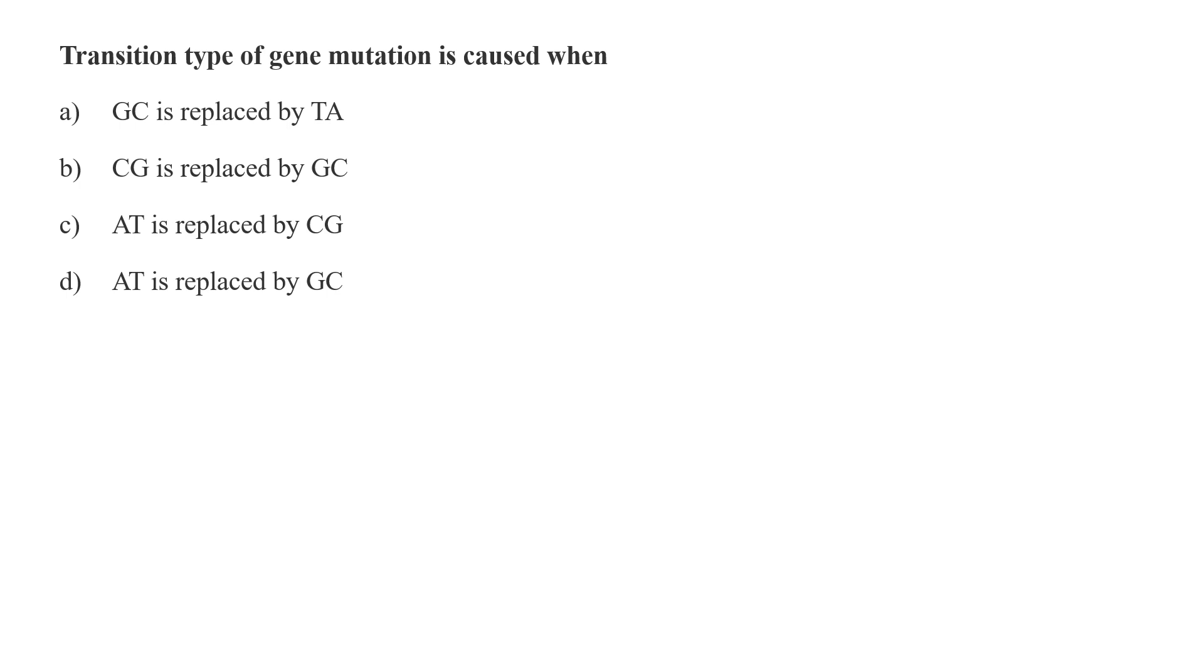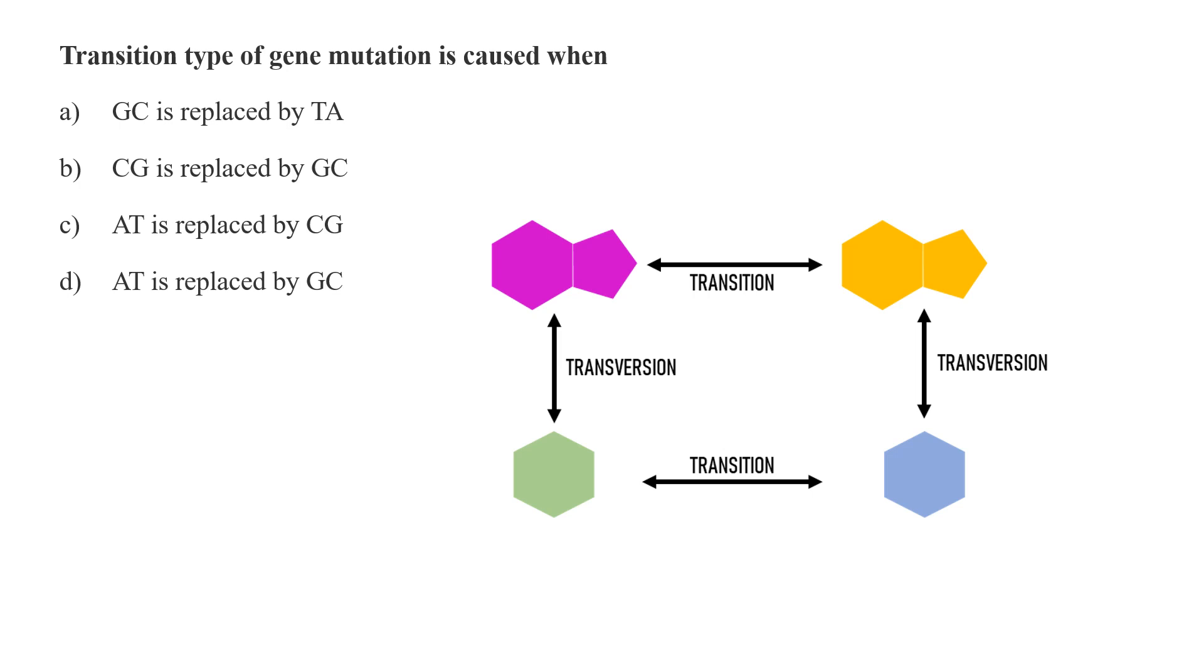Transition type of gene mutation is caused when GC is replaced by TA, CG is replaced by GC, AT is replaced by CG, or AT is replaced by GC? Whenever a ring is exchanged with a similar ring, then such mutations are called transition. But if a ring is replaced with a different ring system, then such mutations are called transversion. So now we have been given transition type of gene mutation. That means ring will replace similar ring structure. Adenine, which is a purine, a two-membered ring structure, must be replaced with two-membered ring guanine. While thymine, which is a pyrimidine, a single ring structure, should be replaced with another single ring structure, that is cytosine. So here, transition type of gene mutation means AT should be replaced by GC, option D.